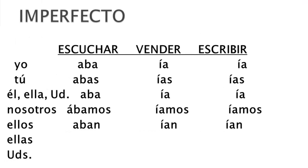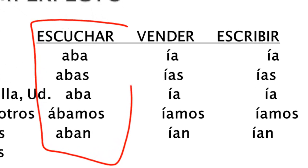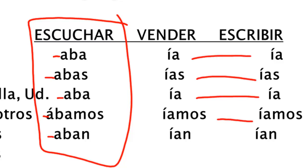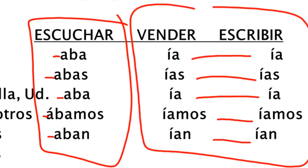If we move to the imperfect — and this is where some people get confused — we've got the AR's. So like if it's escuchar and you want to say 'I used to listen' or 'I was listening': escuchaba, escuchabas, escuchaba, escuchábamos, escuchaban. ER's and IR's, birds of a feather, they stay together. Vendía — I used to sell cars. Yo vendía carros. El escribía a su abuela todos los domingos — he used to write letters to his grandma every Sunday. That's more of a continual repeating action, so we're using the imperfect.